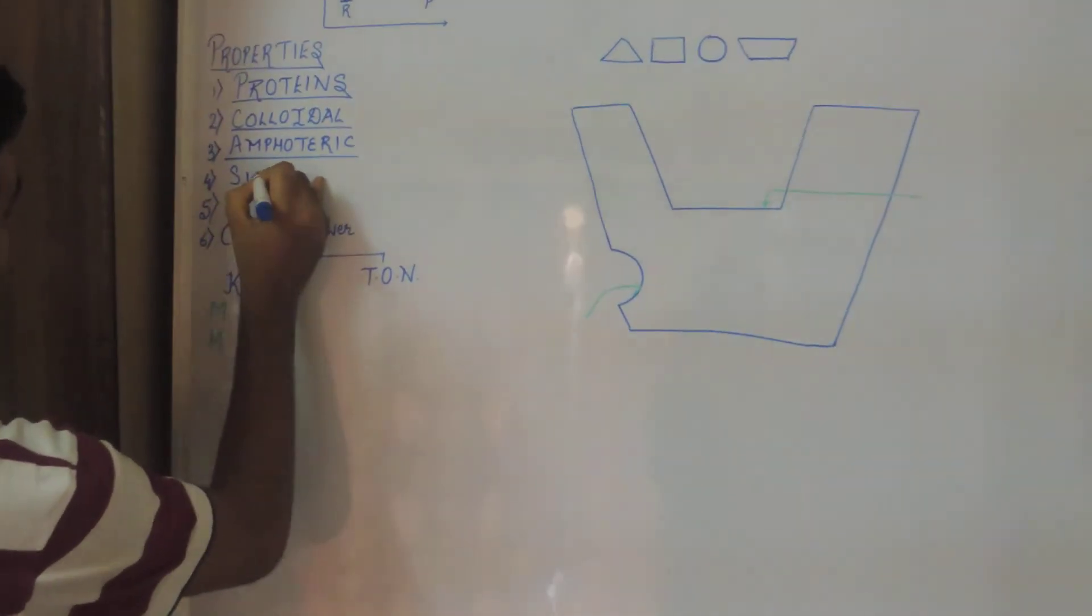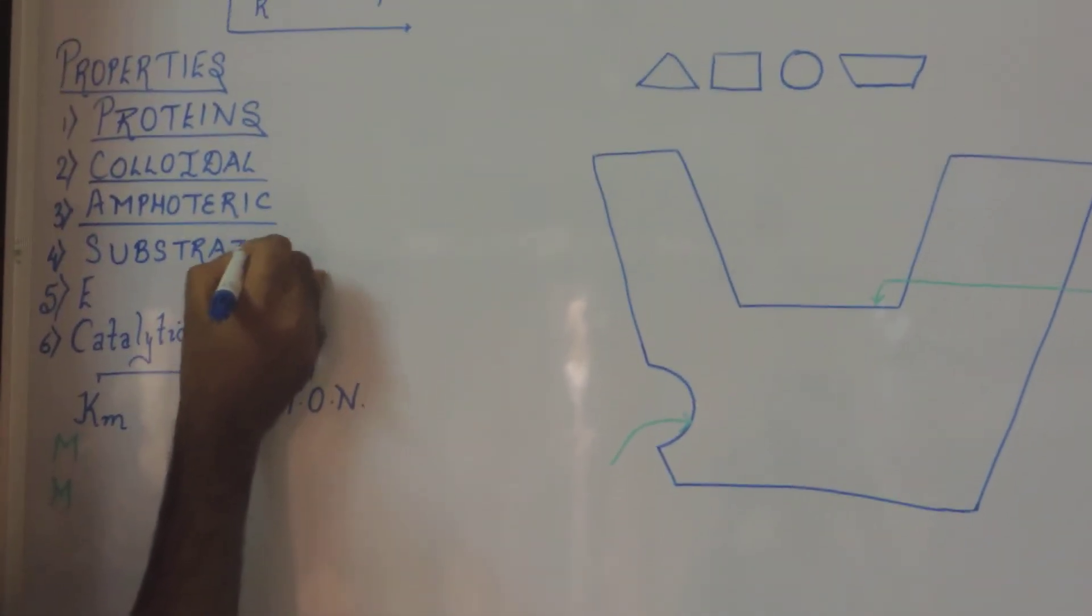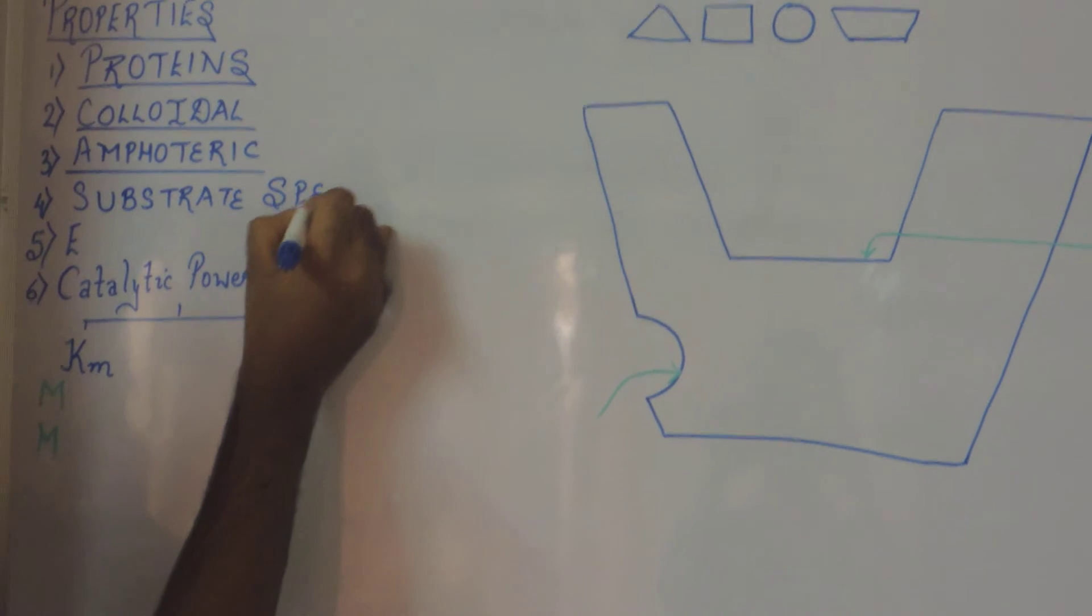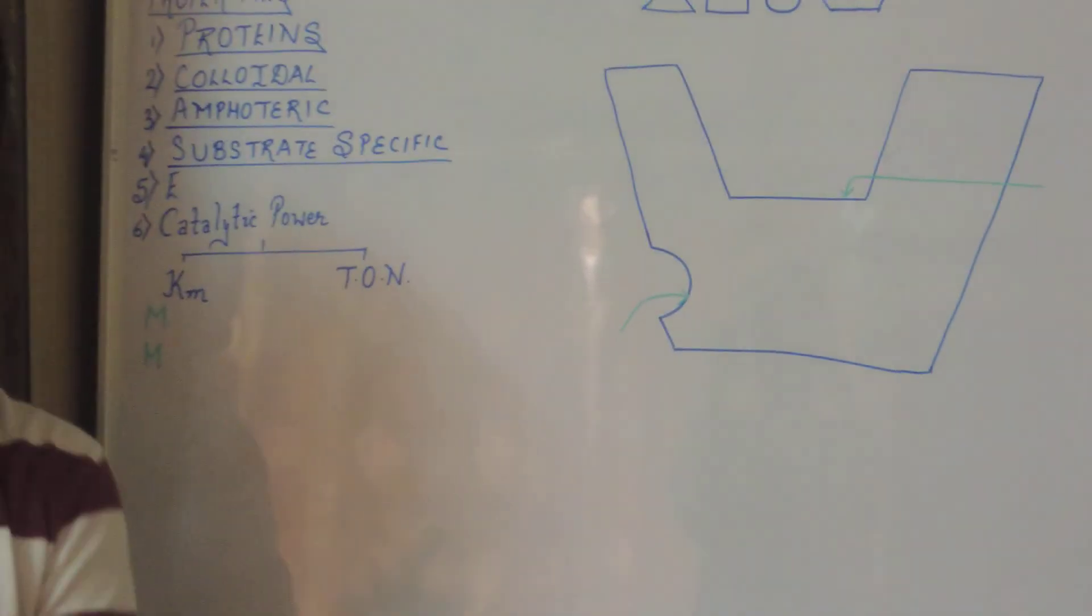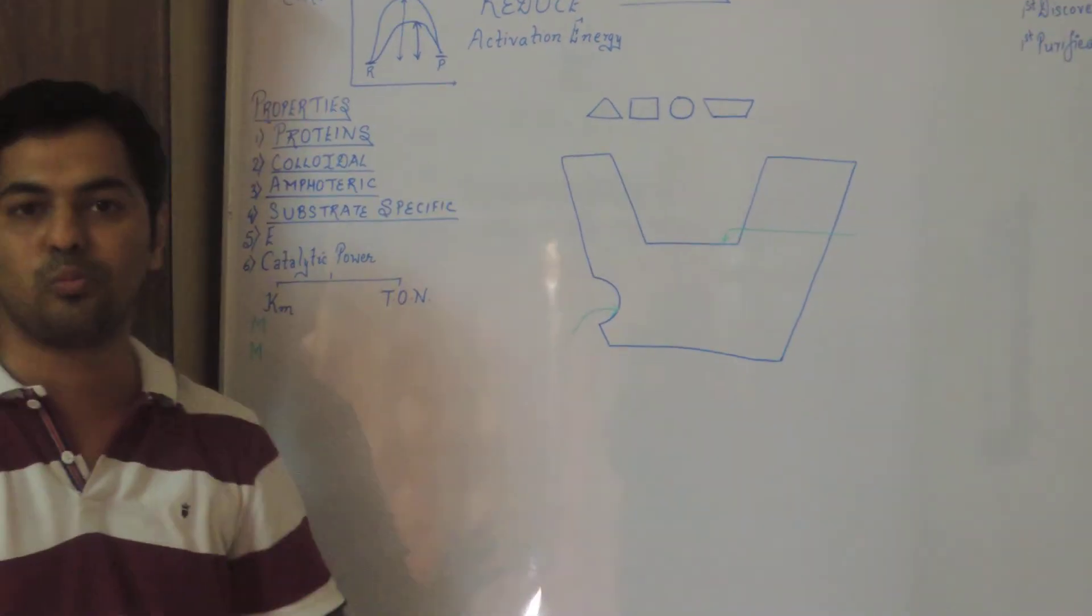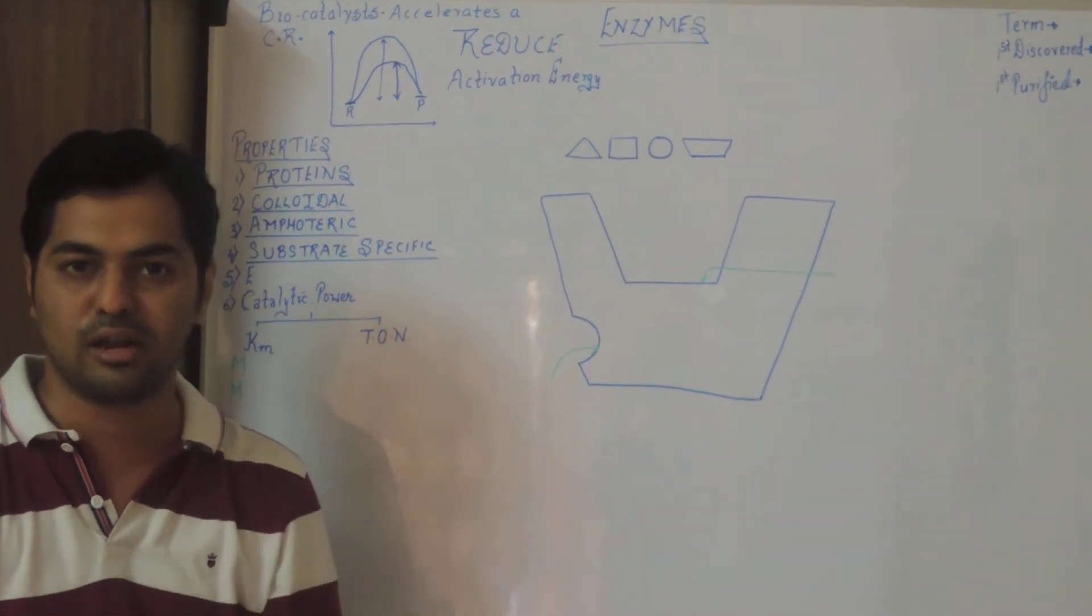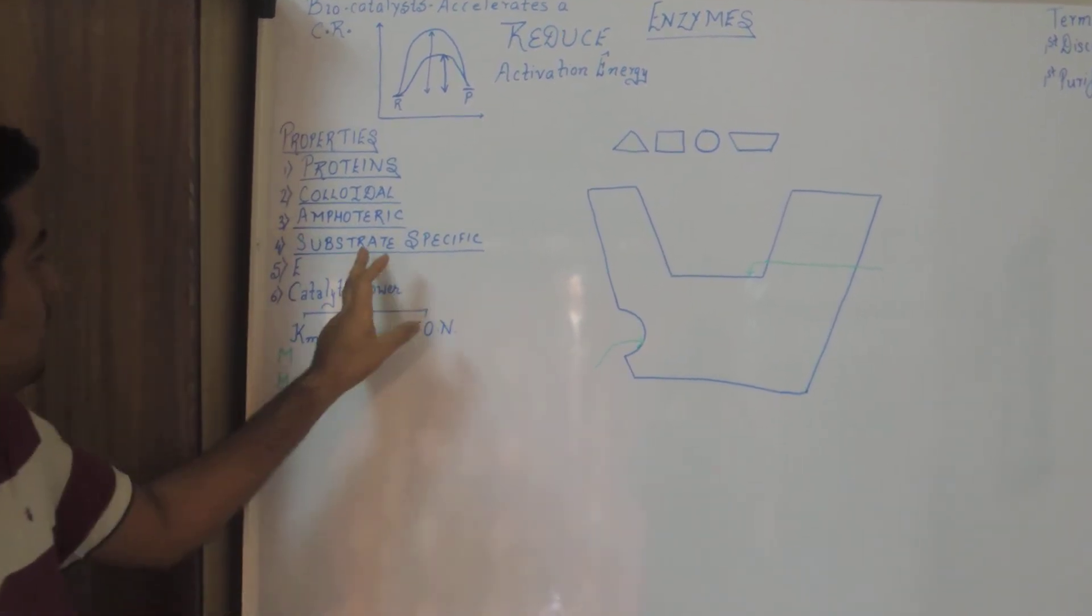Next property is enzymes are substrate specific. Now what does a substrate mean? Substrate is nothing but a reactant. And a particular reactant only will be converted into product. Not any kind of reactant can come and bind with the enzyme and be converted into product. So enzymes are substrate specific.